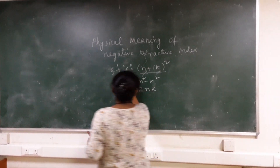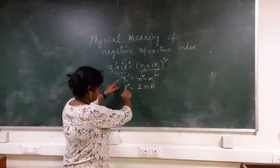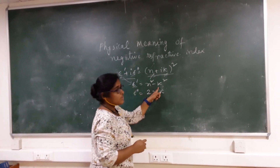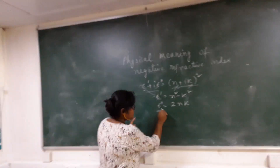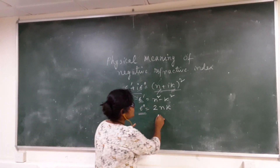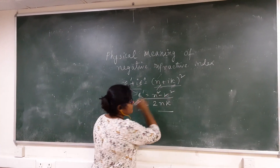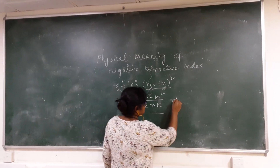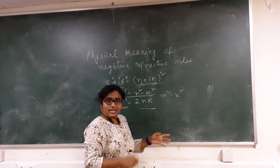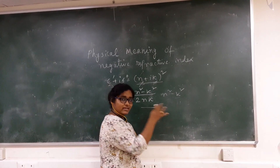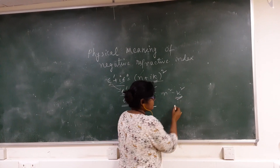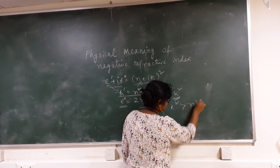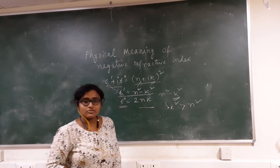If we expand this, the real part of the dielectric constant equals n² − k², and the imaginary part of the dielectric constant equals 2nk. Now, if the refractive index is negative — meaning this real part n² − k² is negative — then k² will be greater than n².